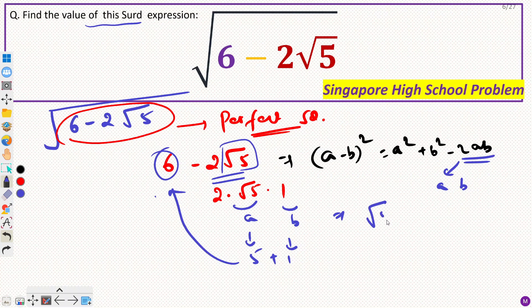So, from here, can I say that root 5 minus 1 whole square. Now, if I take a square root of this, then I will get root 5 minus 1. And that's what our answer is. So, we have root 5 minus 1.